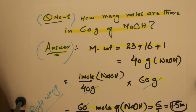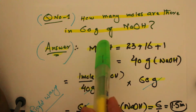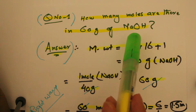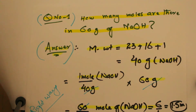Here we have a question: how many moles are there in 60 grams of sodium hydroxide? To solve this kind of question, first of all you need to find the right conversion factor. But before discussing that, let's calculate the molecular weight of sodium hydroxide.